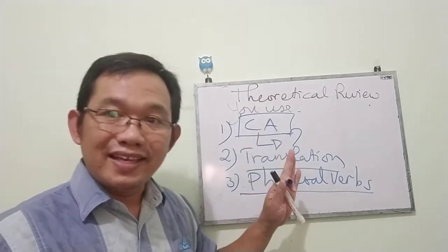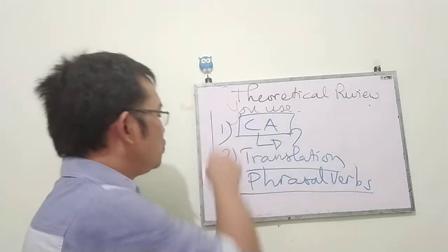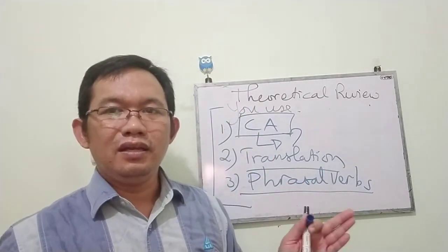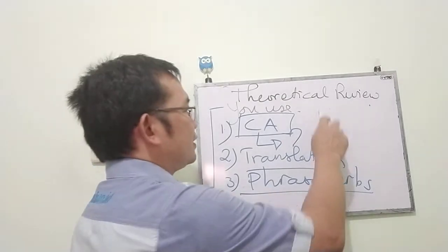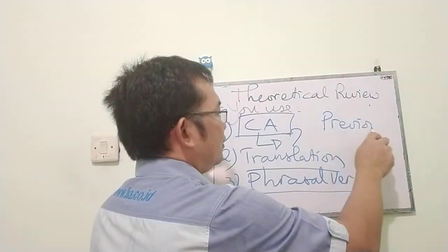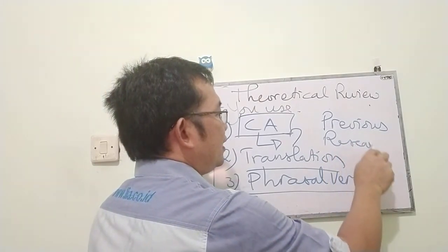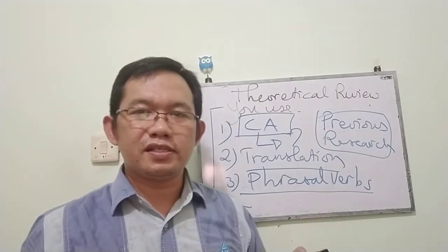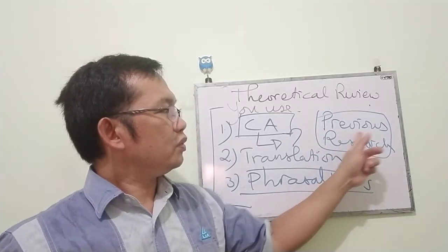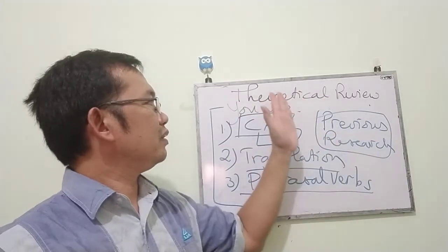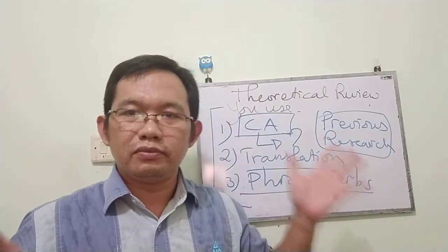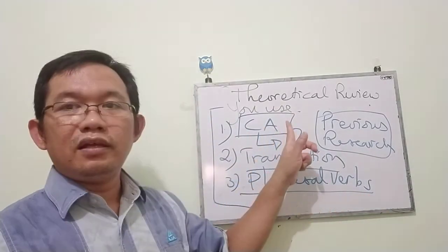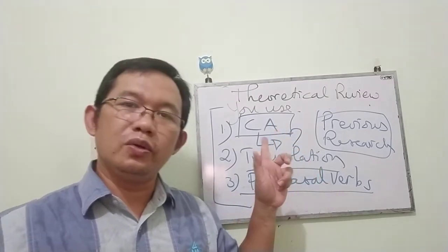Is that enough? Yes, but sometimes you may also need to show another theory or previous research. However, it is not essential to include previous research. So if you do not want to explain previous research, you do not need to write it. What you need to do is just write the theory that you are using in your research.